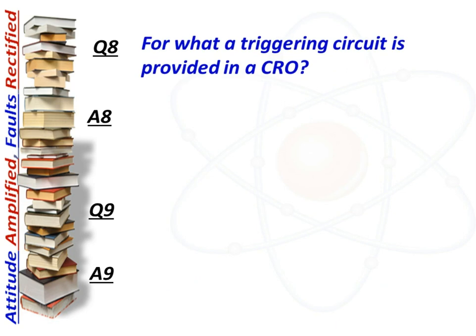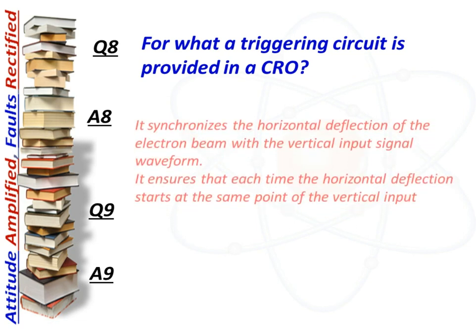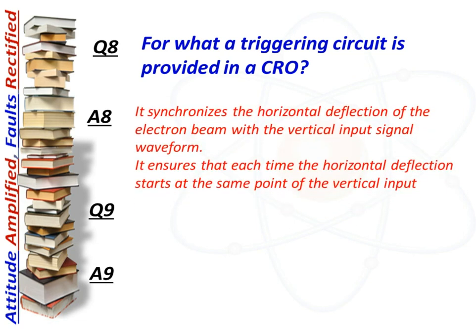Next question: for what purpose is a triggering circuit provided in a CRO? Answer: It synchronizes the horizontal deflection of the electron beam with the vertical input signal waveform. It ensures that each time the horizontal deflection starts at the same point of the vertical input.